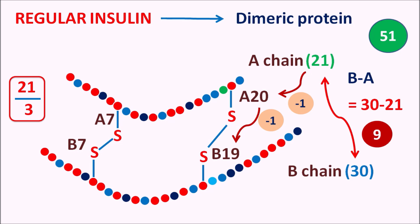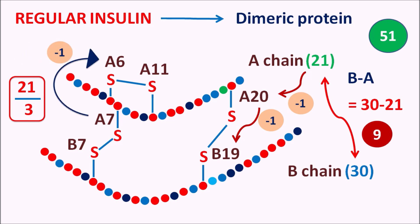The third disulfide bridge is an intra-chain bridge, located within the A chain at positions A6 and A11. This can be remembered by noting that A7 has one disulfide bridge — subtract one to get A6, then add five to get A11. In summary, insulin has three disulfide bridges: A7–B7 (inter-chain), A20–B19 (inter-chain), and A6–A11 (intra-chain within the A chain).